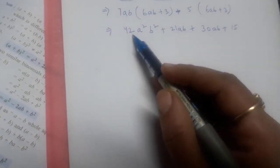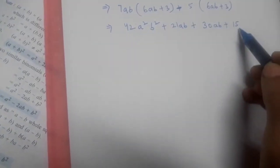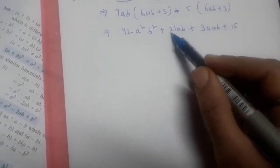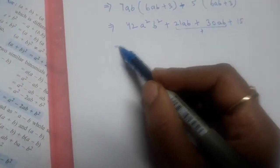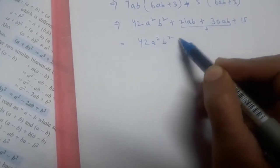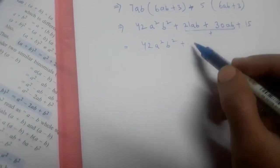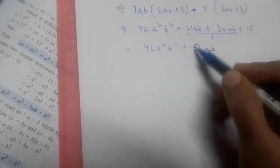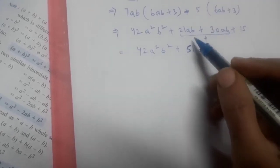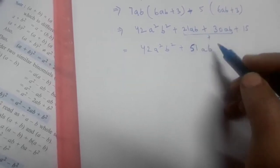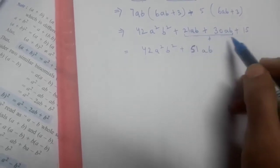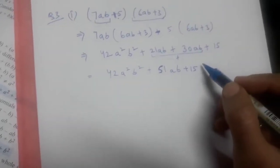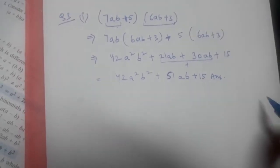So as we can see, 42 is with a²b². 15 has nothing with it, but 21ab and 30ab are like terms, so we will add them. In our next step: 42a²b² + (30 + 21)ab + 15, giving us 42a²b² + 51ab + 15. When expressions are added, the same terms remain as they are. This is our answer for the first part of question number 3.